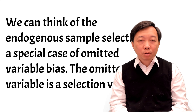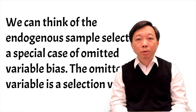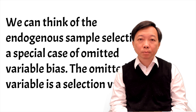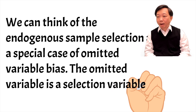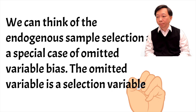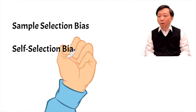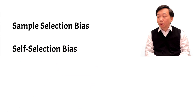The omitted variable could be the factor the selection is based on, or the probability of selection into the sample. In our women's wage equation, it could be the probability of being selected into the labor force. When endogenous sample selection occurs, we need to do sample selection corrections. The bias caused by the selected sample is called sample selection bias, also called self-selection bias because only the women who choose to work are in the sample.